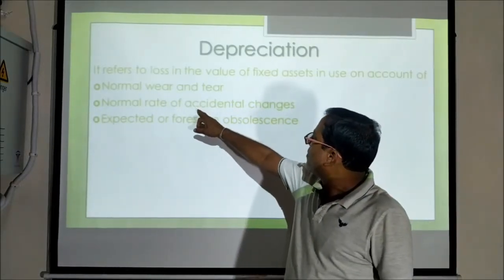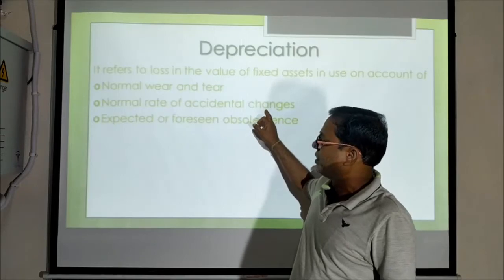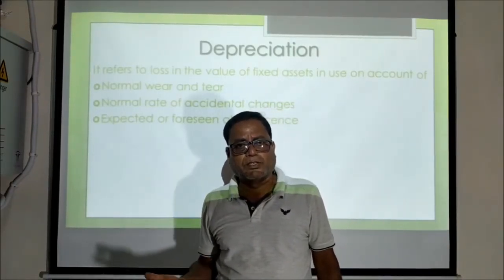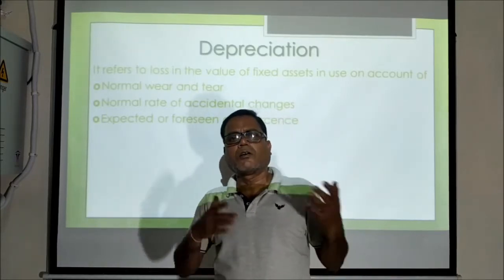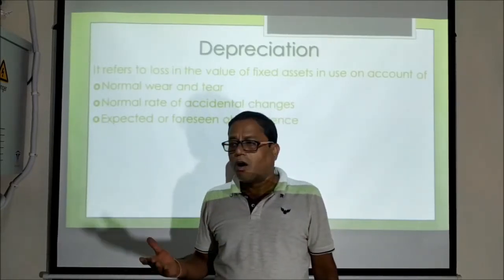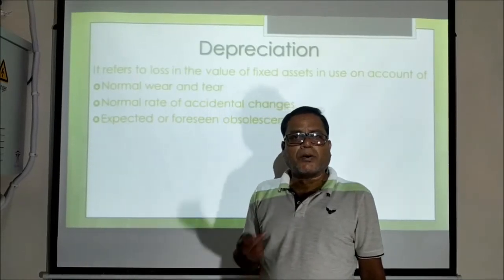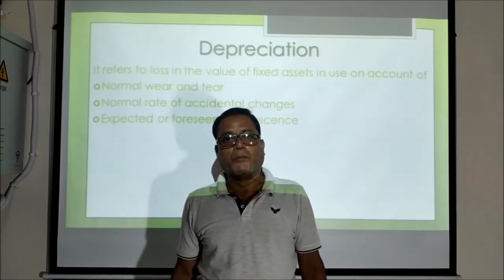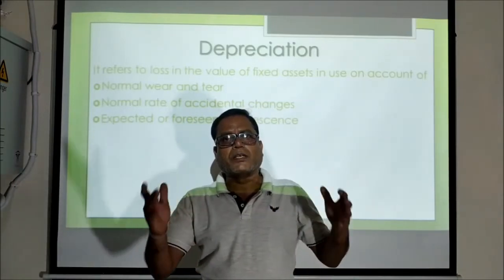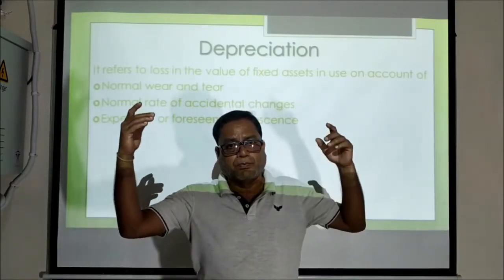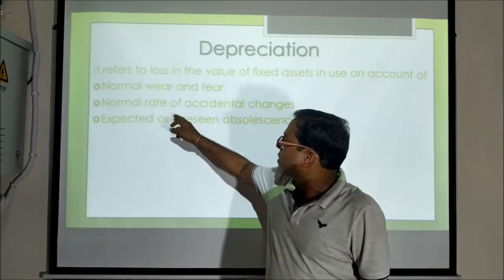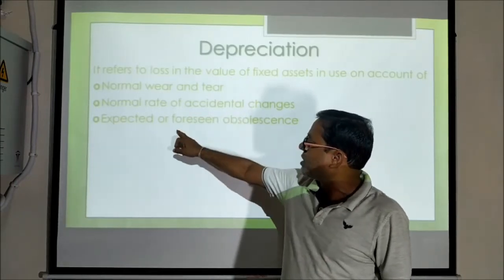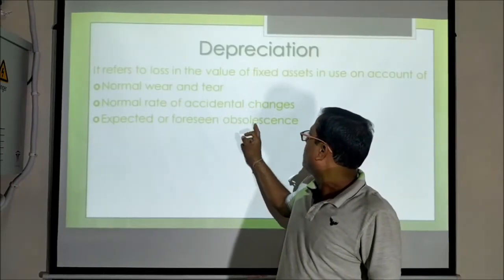The second reason is the normal rate of accidental changes. Due to some avoidable or unavoidable situations, the value of capital goods changes. For example, when computers were invented, all of a sudden the value of typewriters fell drastically. The third reason is expected or foreseen obsolescence — and there is also unexpected or unforeseen obsolescence.